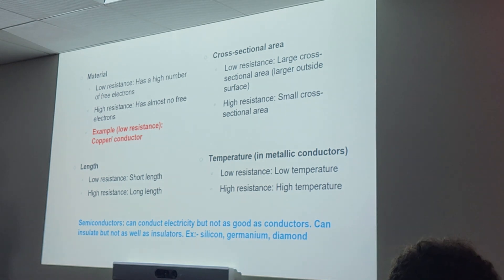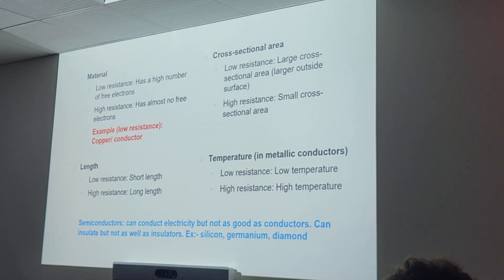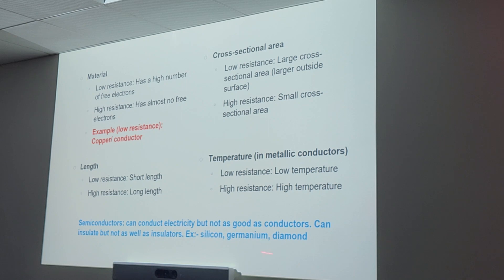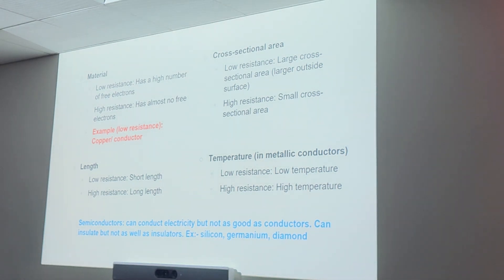We have something called semiconductors. Semiconductors are kind of like half and half — they don't really do their job very well. They can both conduct electricity and insulate, but they're not very good at either. So they can do both, but they're not very good at it. Some examples are silicon, germanium, and diamond. They can conduct and insulate, but they're not preferred in circuits because the way they do it is not ideal, compared to copper and gold, which are excellent conductors.